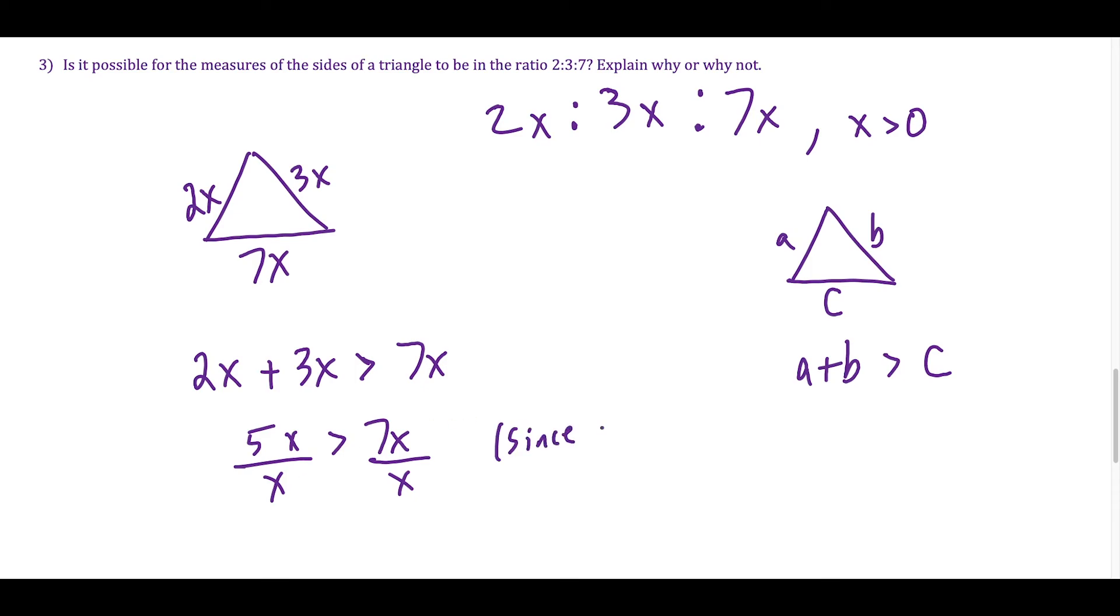That tells me in this case, since X is greater than 0, that would lead me to this inequality here, 5 greater than 7, which is not true. This is a false statement. So because we wind up at a contradiction here, by the triangle inequality theorem, it is not possible for the measures of the sides of a triangle to be in this ratio 2 to 3 to 7.